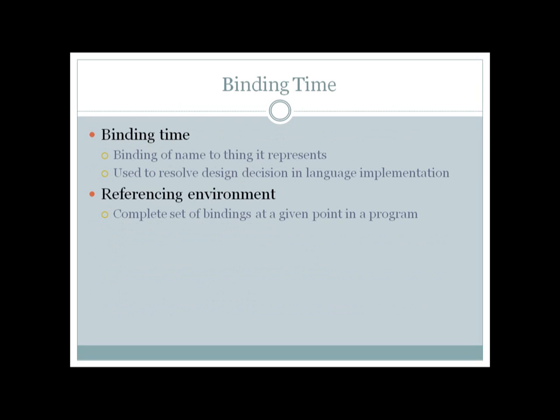Now, moving on to binding time — this is very important. To understand binding time, we must first know what binding is. Binding is an association between two things. In programming paradigms, binding is the association of a name to the object to which it binds. The time taken for this binding is called the binding time, and the set of all bindings at a given point in a program is called the referencing environment. These three definitions are very important throughout this module.